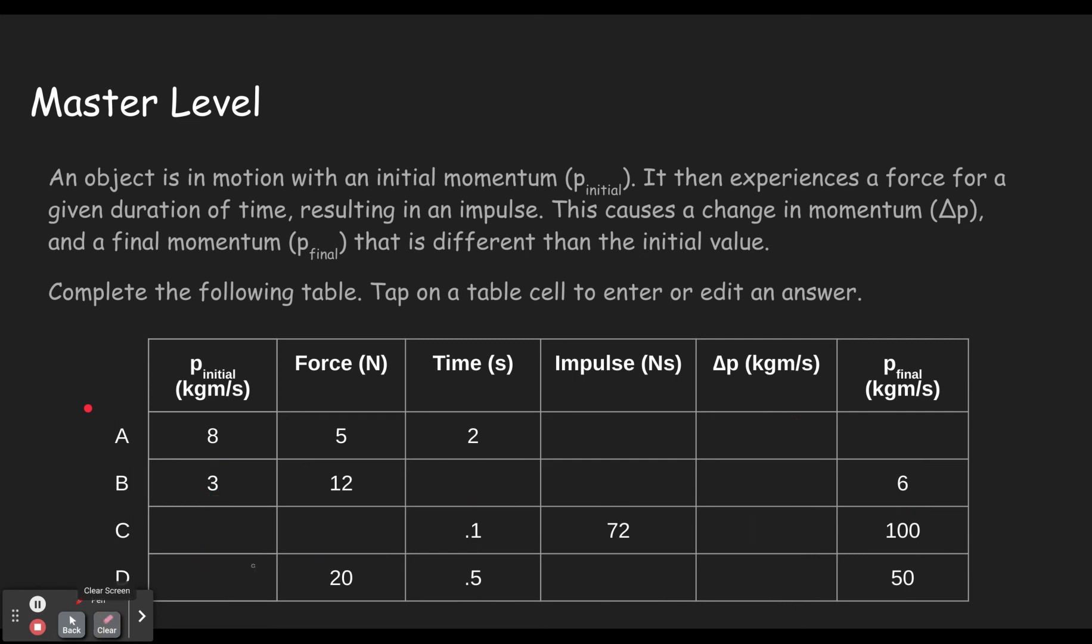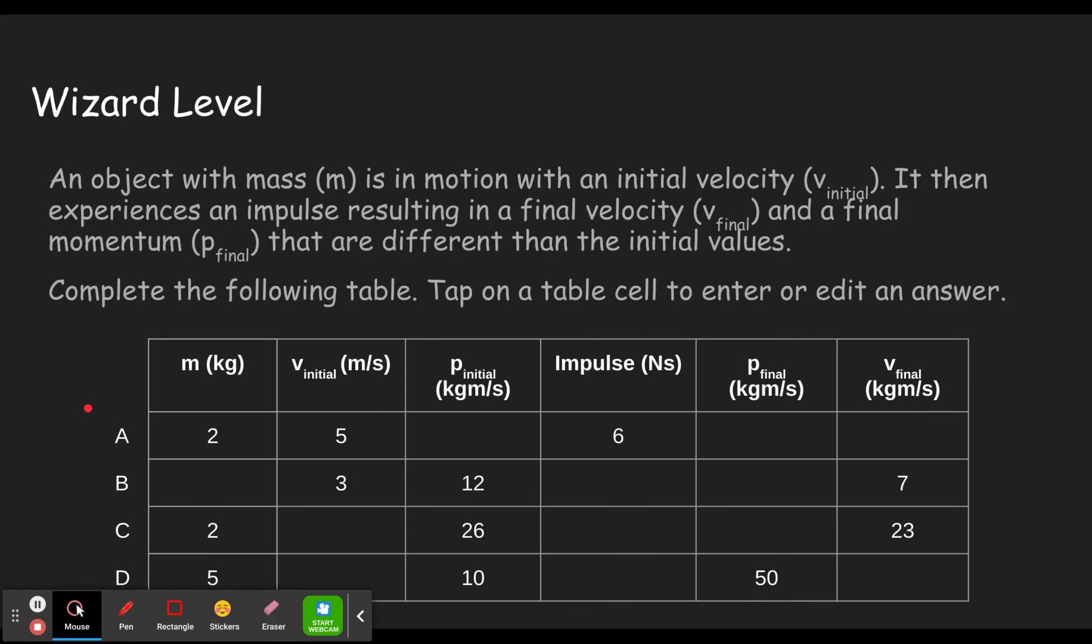All right, moving on to the wizard level. The wizard level is a little bit different. So let's read through this a little bit more carefully. An object with mass m, so now we're throwing mass into it, is in motion with a velocity of the initial. Remember that momentum p equals mv.